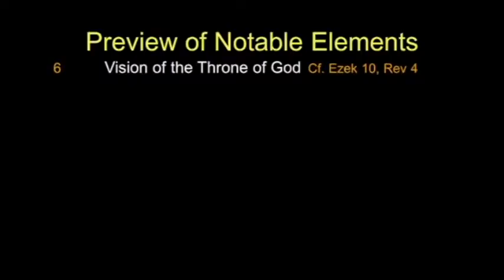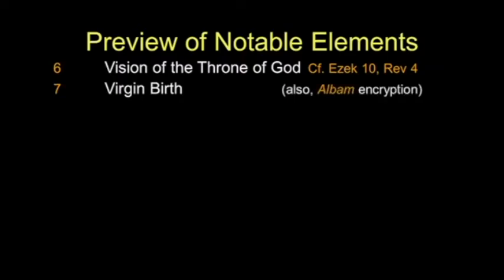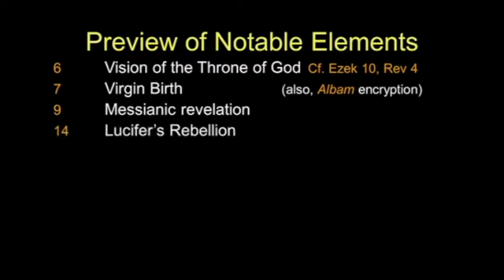To give you a quick glimpse of what we're going to get into: we're going to discover the vision of the throne of God — I think Isaiah actually was there, not just a vision, but we'll get into that in chapter 6. The virgin birth issue we'll deal with in chapter 7. That's also a chapter where we'll encounter interesting encryptions that reveal a plot against the king. Chapter 9 will be the messianic revelation. We'll also get an exposure to the origin of Lucifer. And we'll even talk a little bit about the great pyramid, which may be an allusion in chapter 19.